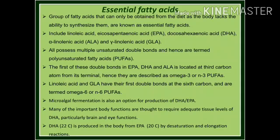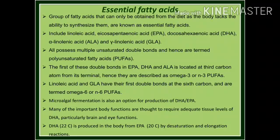Microalgal fermentation is also an option for production of DHA and EPA. Many important body functions are thought to require adequate tissue levels of DHA, particularly for brain and eye functions. DHA, which is the C22 fatty acid, is produced in the body from EPA, the C20 fatty acid, by desaturation and elongation reactions.